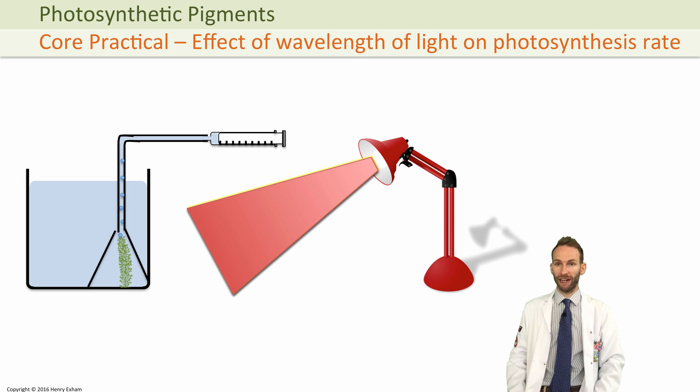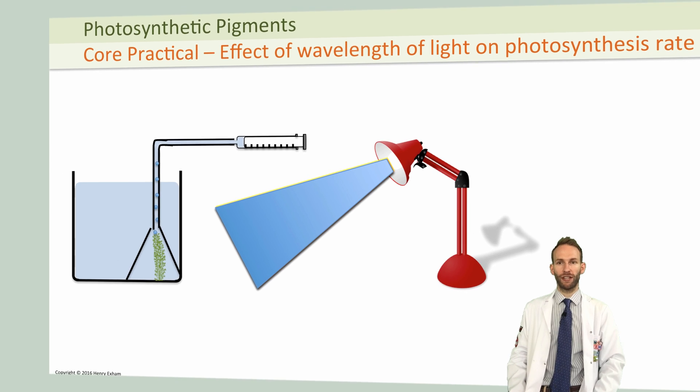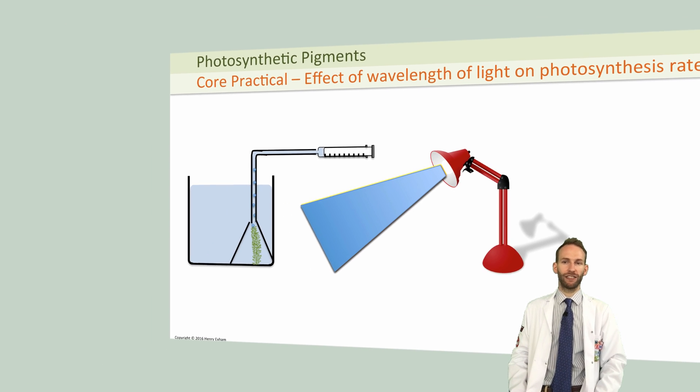Be careful to make sure that all the other variables that need to be controlled, such as carbon dioxide levels in the water and the distance of the light from the plant and the temperature, for example, are all kept constant to make it a valid experiment.